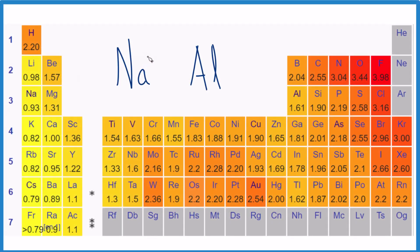If you're asked to figure out which element has a greater electronegativity value, sodium or aluminum, here's how you do it.